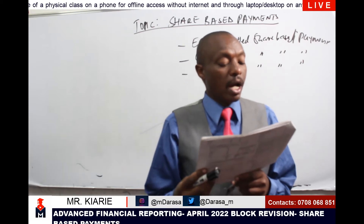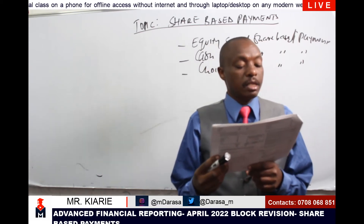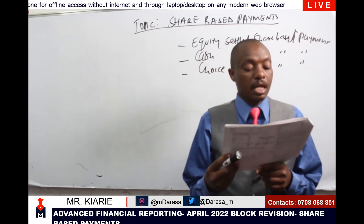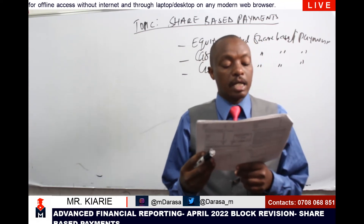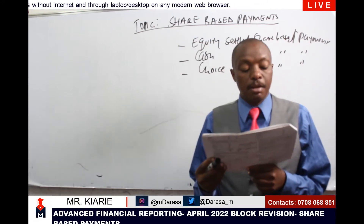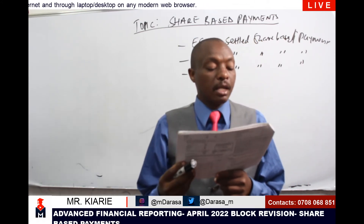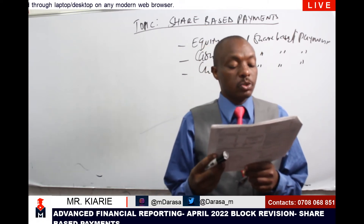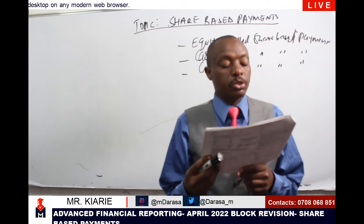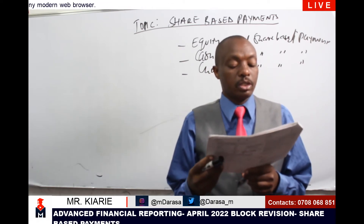Required: Show how Beta Limited should report the transactions of the above scheme, as per the requirements of IFRS 2 share-based payments, over the 4-year period ending 31st of March 2020. Assume that all eligible employees will exercise their rights as of 31st of March 2020.